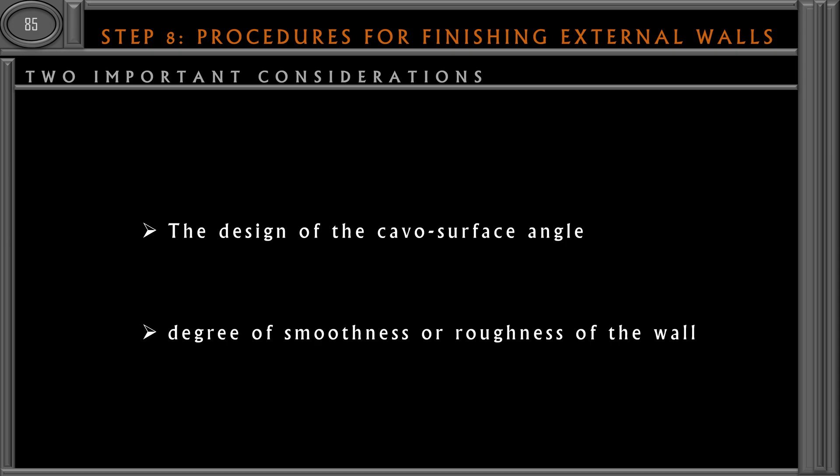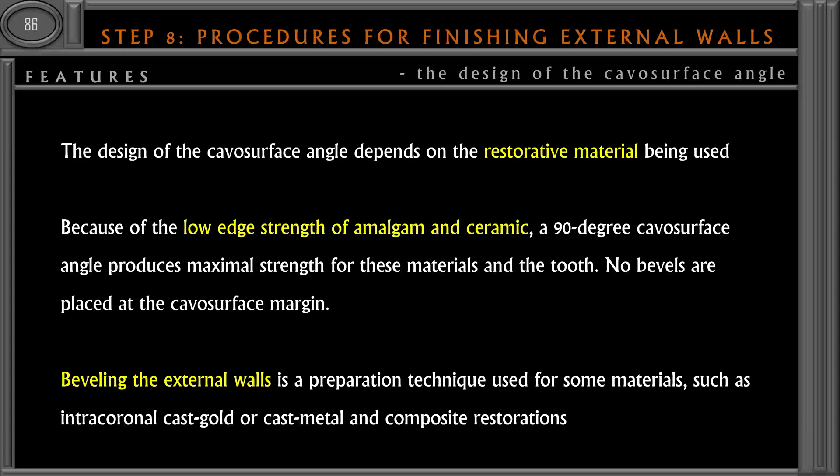There are two important considerations while finishing the external wall: first, the design of the cavo-surface angle, and second, the degree of smoothness or roughness of the wall. Let's first look at the design of the cavo-surface angle.